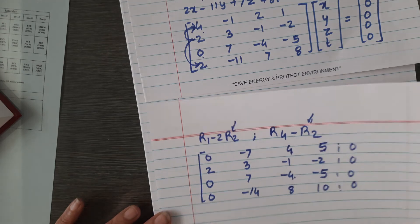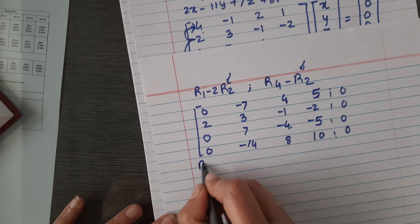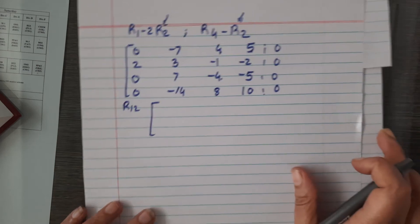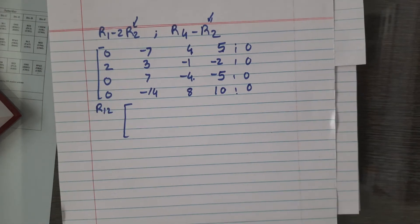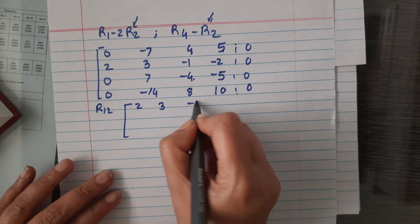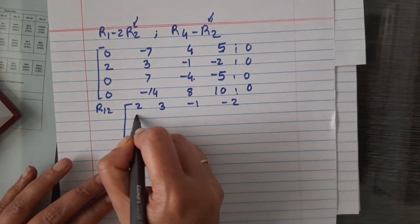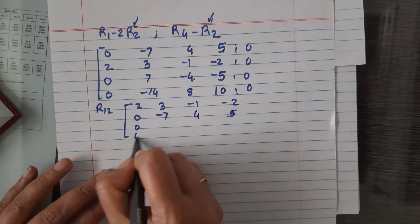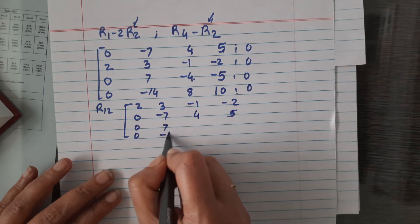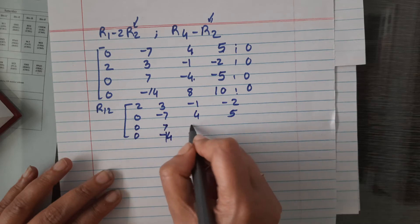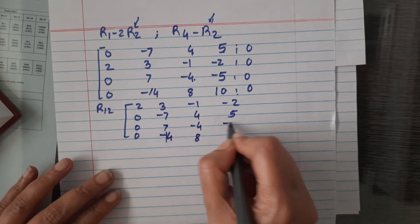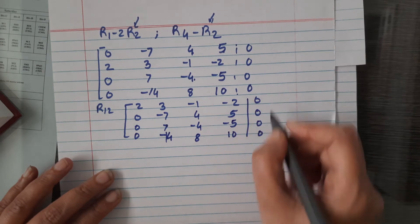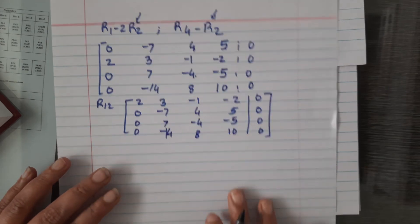We then interchange R1 with R2. After the interchange, the matrix becomes: R1 = [2, 3, -1, -2], R2 = [0, -7, 4, 5], and the remaining two rows are as before: [0, 7, -4, -5] and [0, -14, 8, 10].